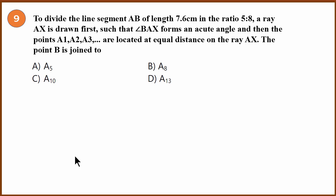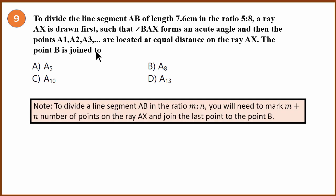Ninth question. To divide the line segment AB of 7.6 cm in the ratio of 5 is to 8, a ray is drawn first such that BAX forms an acute angle, and then we start plotting A1, A2, A3 on the ray AX at equal distance. So the point B is joined to...